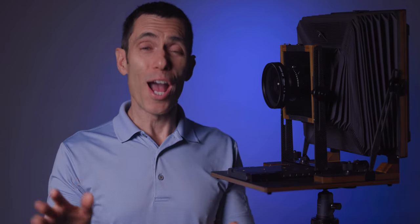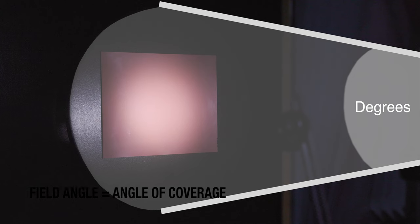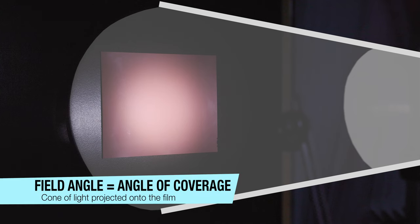In order to understand some of the manufacturer's specifications of this lens, it's important to briefly review some optical properties. Don't worry, I'll make this as painless as possible. A lens projects a cone of light onto the film plane and the shape of that defined cone is characterized in degrees. This is what is referred to as the field angle, also known as the angle of coverage.